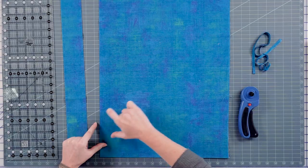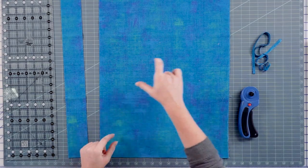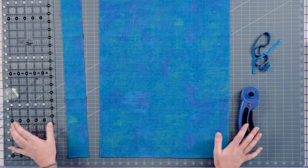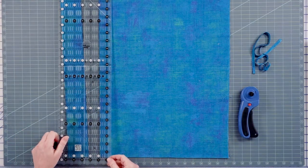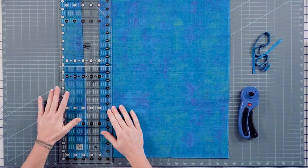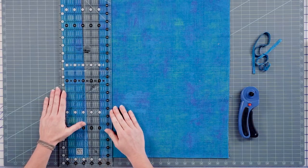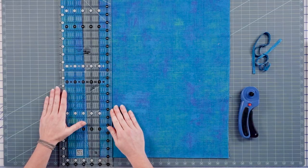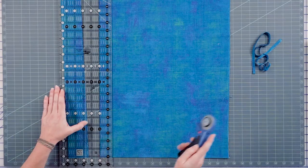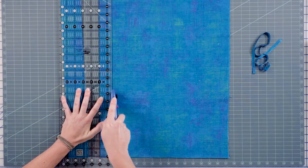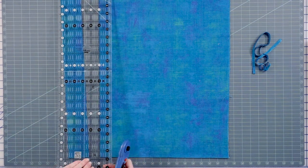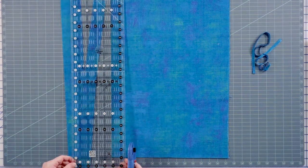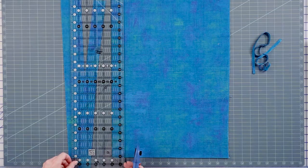When you're sewing strip sets together, if you get one or two that have a little wow in them, the whole strip set is compromised. And the narrower the strips, the easier it is to get them off, to manipulate them. So here I'm going to do some one and a half inch strips.